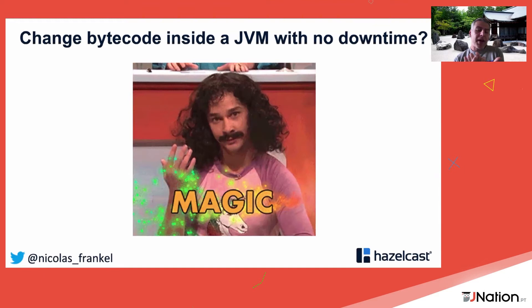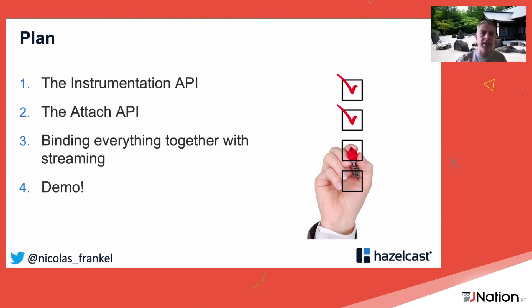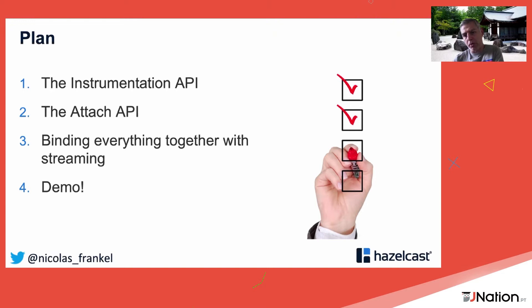Since we're using the JVM, what if we could change the bytecode inside a running JVM — keep it running and just swap the bytecode? That would feel like magic. In this talk I'll go through two APIs: the Instrumentation API and the Attach API, then show how to bind them using streaming with Hazelcast Jet, and finish with a demo.